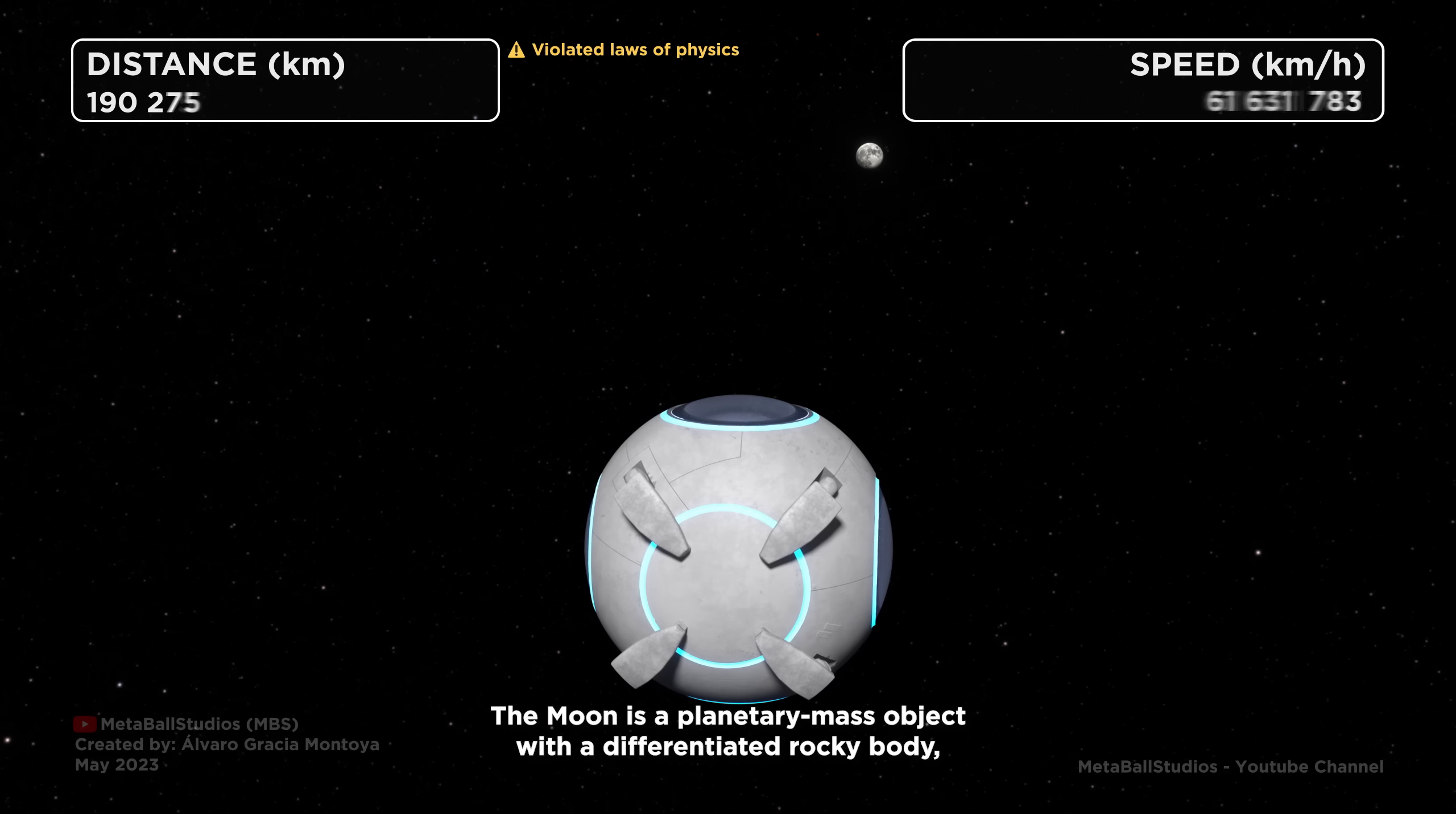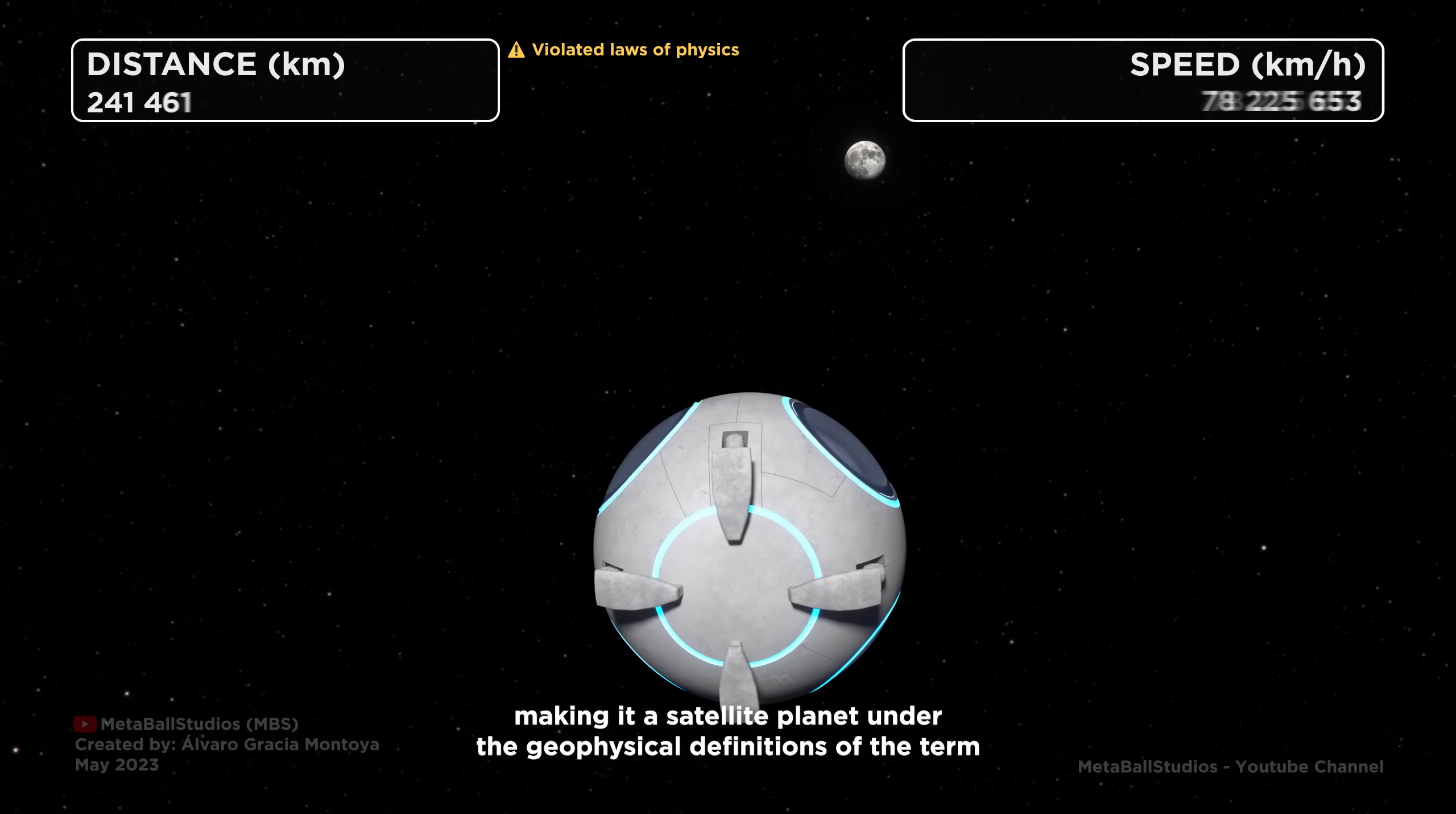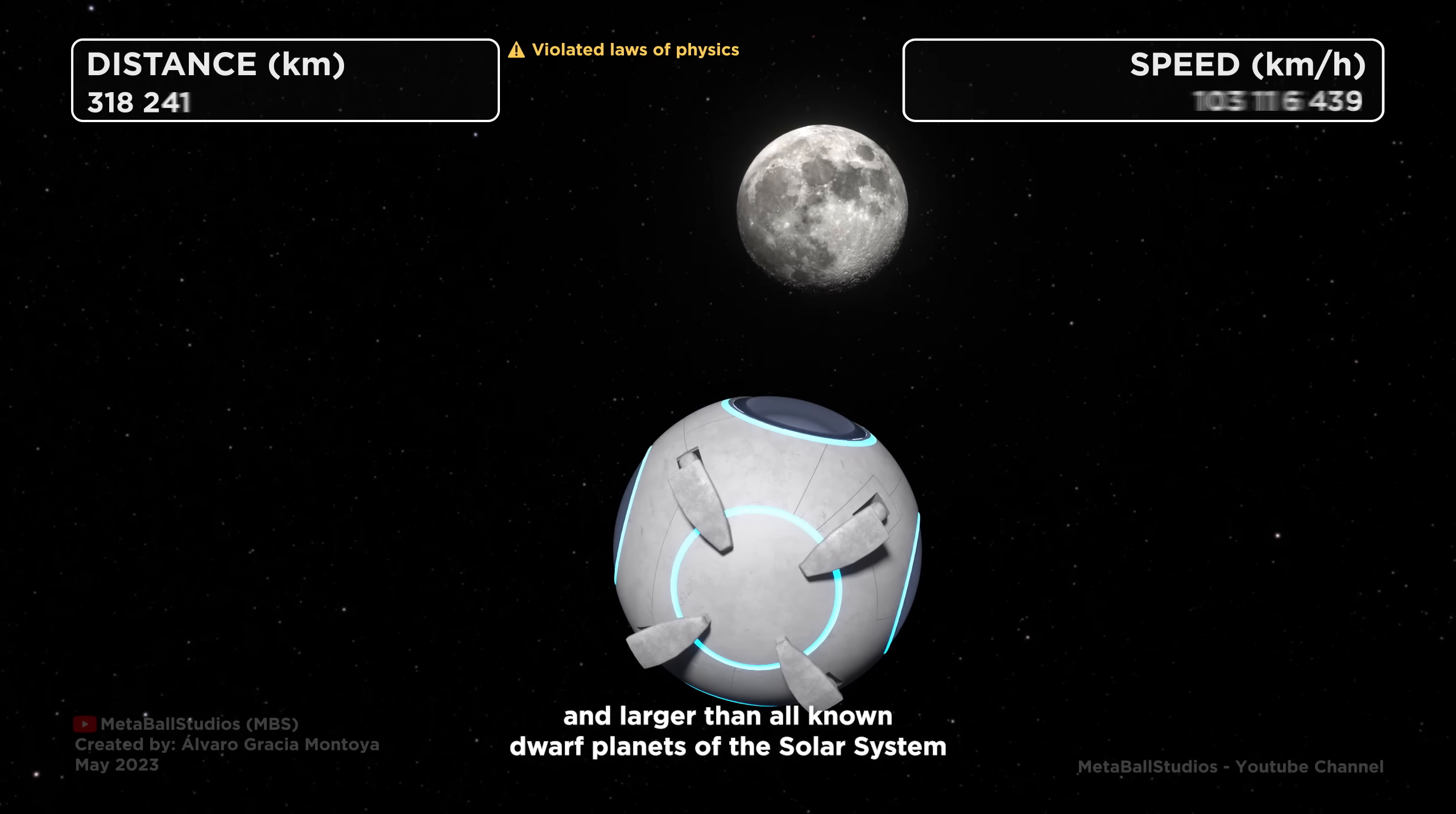The Moon is a planetary mass object with a differentiated rocky body, making it a satellite planet under the geophysical definitions of the term and larger than all known dwarf planets of the solar system.